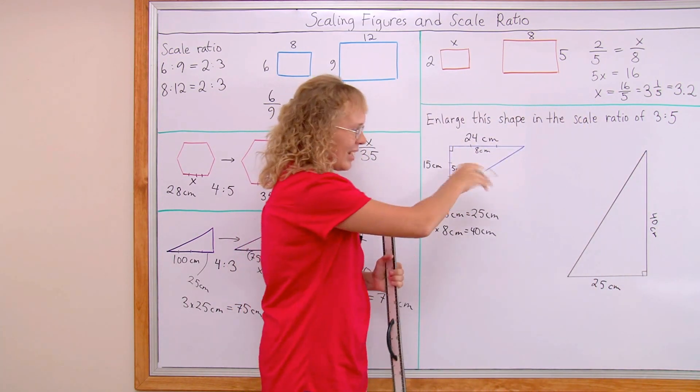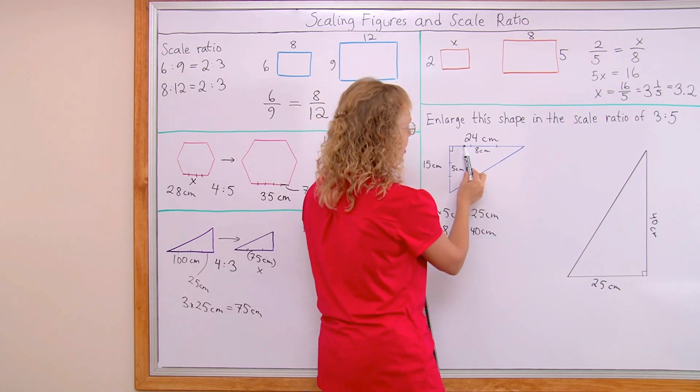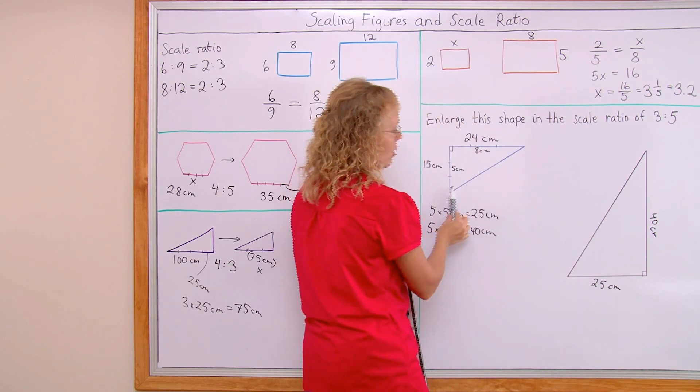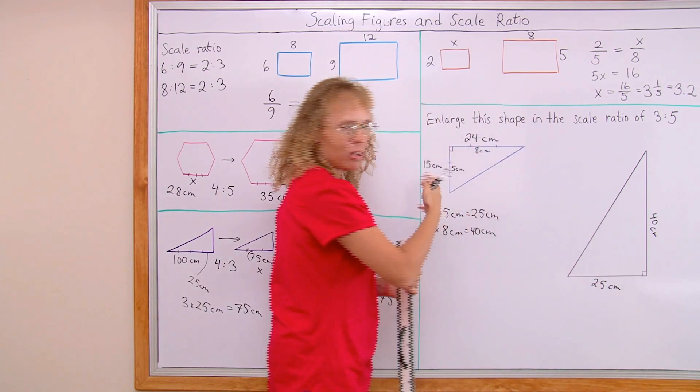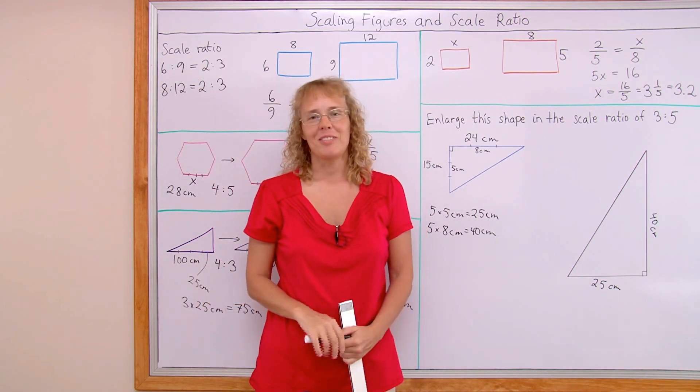Now this, I drew it as if it had been turned. This 24 centimeter side corresponds with the 40 centimeter side, and then this side corresponds with that side. The shorter with shorter, the longer with longer. Okay, we're all done with all of this, and I hope it was helpful.